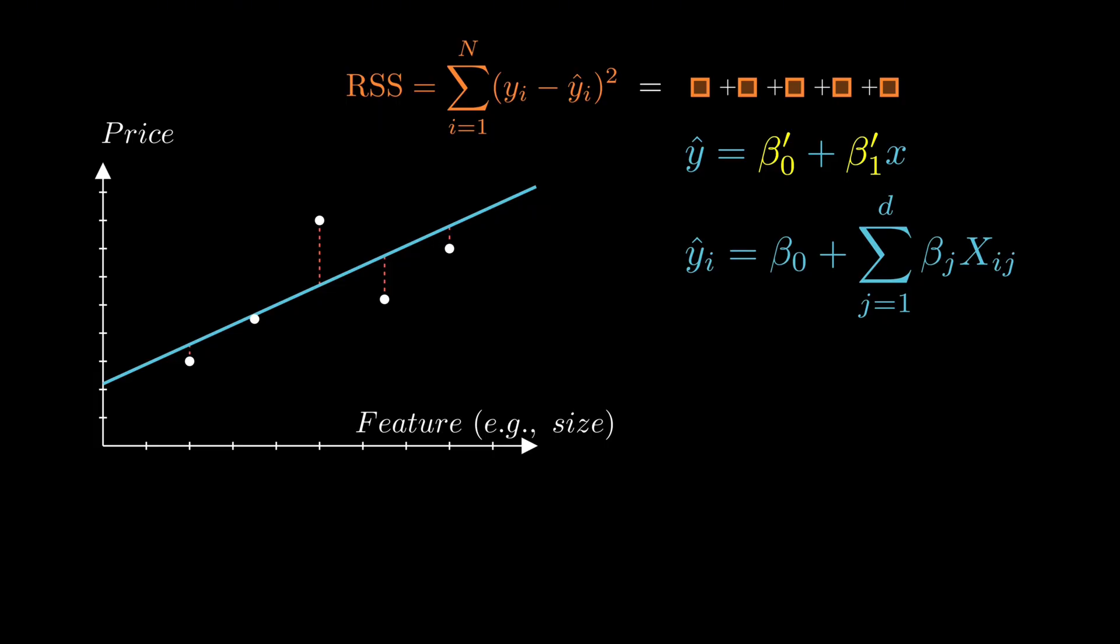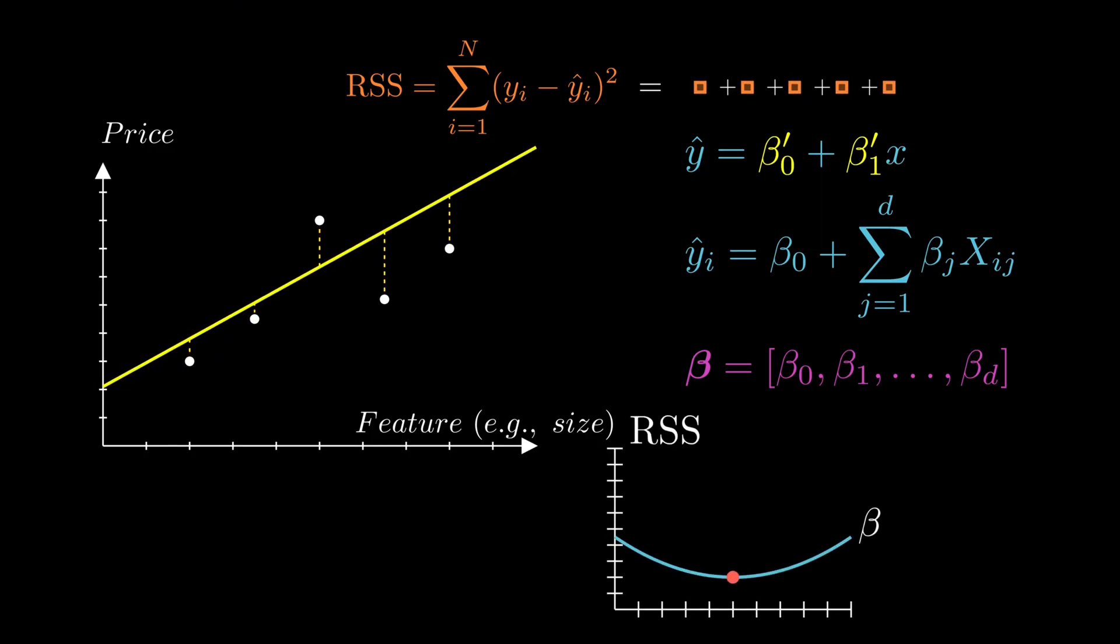We want to find the values of beta 0, beta 1, and the rest, for which the RSS becomes minimum. When we've found the values of these parameters that give the lowest possible RSS, we say we've trained the model.